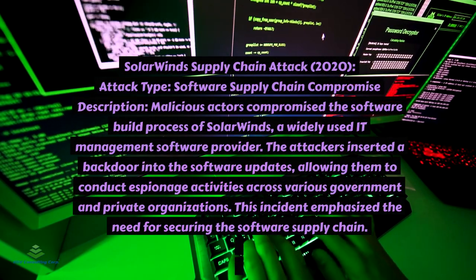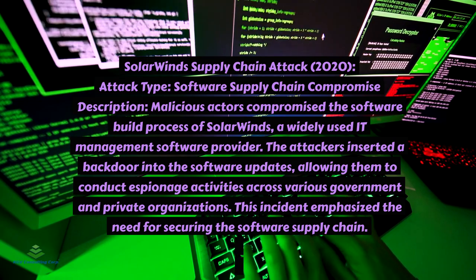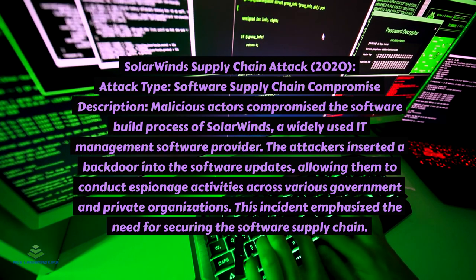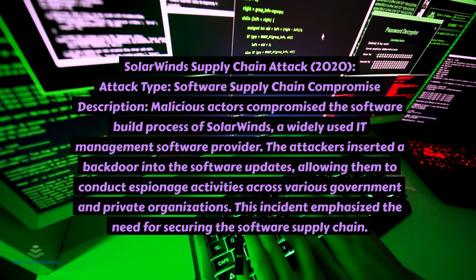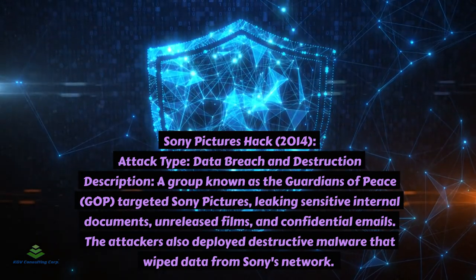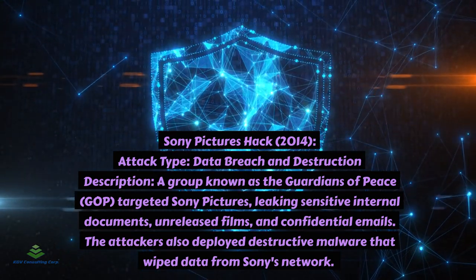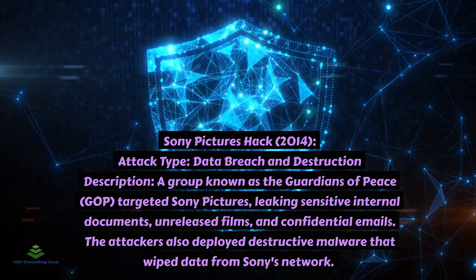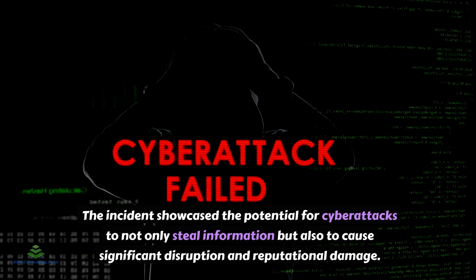SolarWinds supply chain attack, 2020 — attack type: software supply chain compromise. Malicious actors compromised the software build process of SolarWinds, a widely used IT management software provider. The attackers inserted a backdoor into the software updates, allowing them to conduct espionage activities across various government and private organizations. This incident emphasized the need for securing the software supply chain. Sony Pictures hack, 2014 — attack type: data breach and destruction. A group known as the Guardians of Peace (GOP) targeted Sony Pictures, leaking sensitive internal documents, unreleased films, and confidential emails. The attackers also deployed destructive malware that wiped data from Sony's network, showcasing the potential for cyberattacks to cause significant disruption and reputational damage.